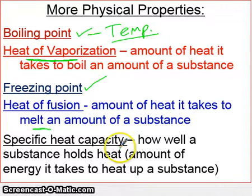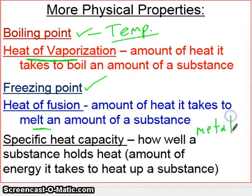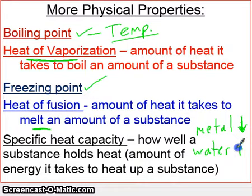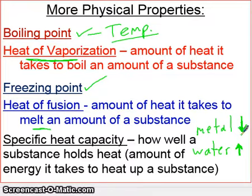Specific heat capacity describes how well a substance holds heat. Different substances hold heat differently. Metal usually has a low heat capacity, while water and other liquids have a very high heat capacity. It takes a lot of heat to warm water up, but not much to warm metal. This is because water holds heat much better than metals — metals are good conductors of heat, so they just pass it on.